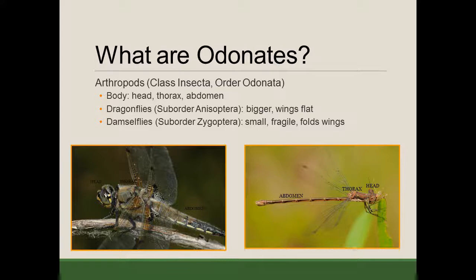One of the things you also want to look for is activity. Dragonflies are much stronger flyers, so if you see something in the field that's zipping above your head, moving fast, it's probably a dragonfly. If you see something that has kind of a bobbing and weaving flight pattern, looks like a much weaker flyer and is much smaller, you're probably looking at a damselfly.